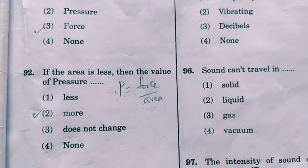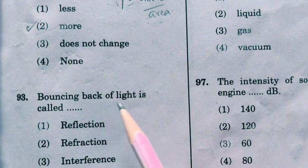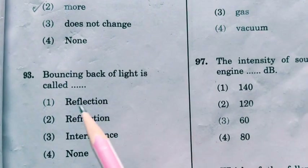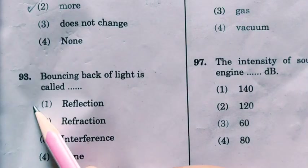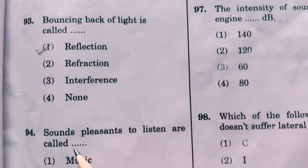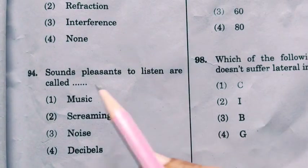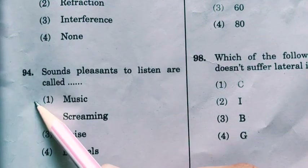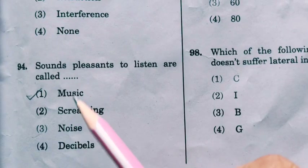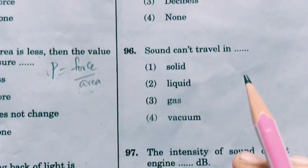The question asks: area is less means pressure will be more, so the second option is the right answer. Next question: bouncing back of light is called reflection. Next: sounds pleasant to listen to are called music; unpleasant sounds are noise, and pleasant sounds are music.